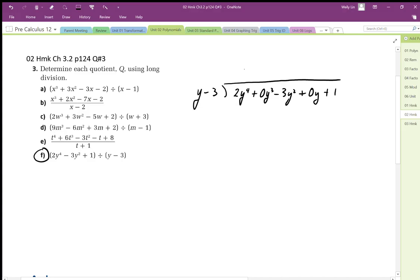And then we can do the long division. So we have 2y cubed, that gives us 2y to the power of 4, minus 3y cubed. So subtracting these, we end up with 3y cubed.